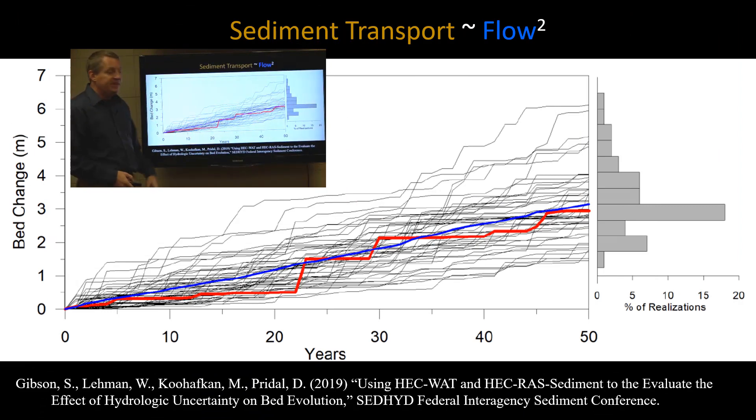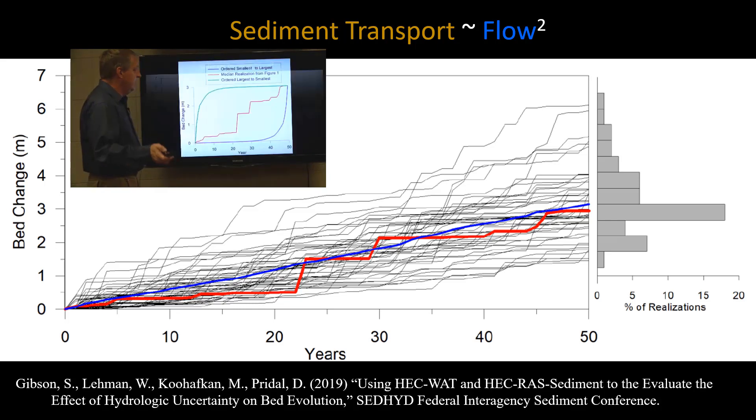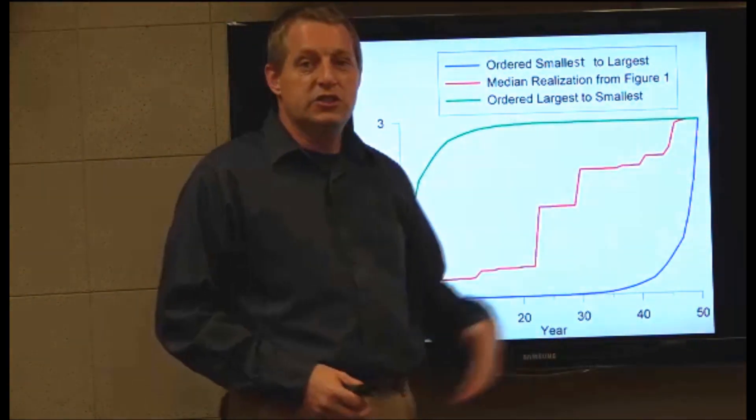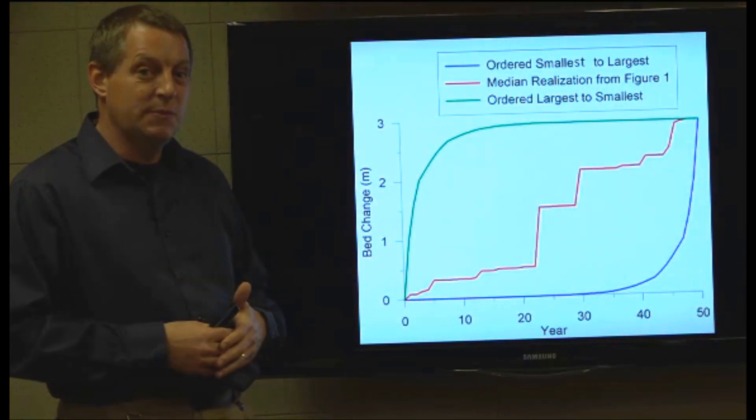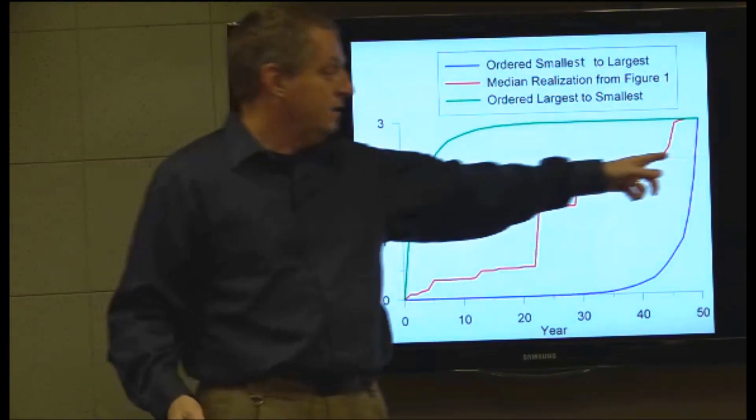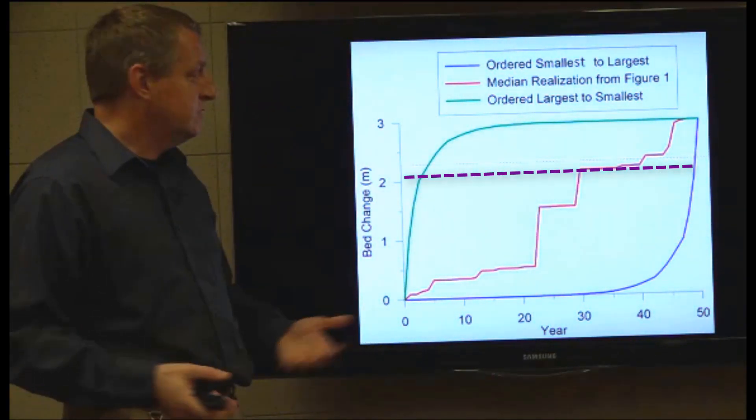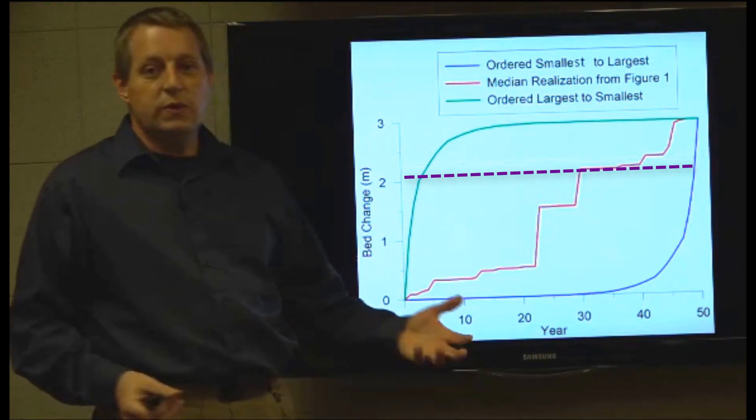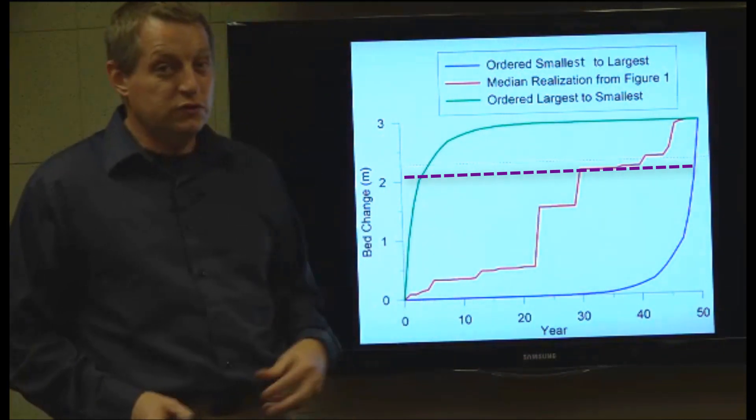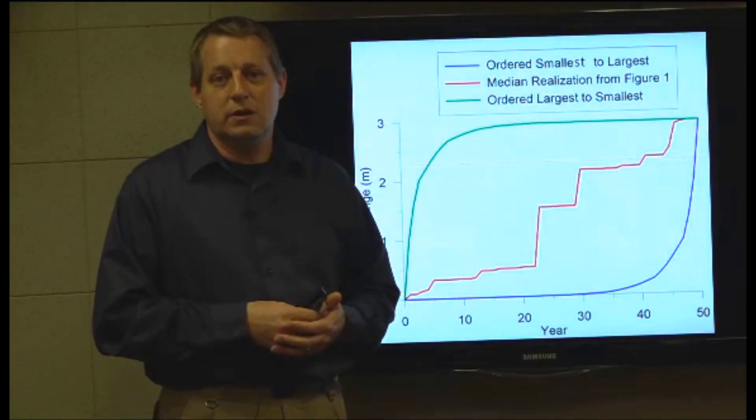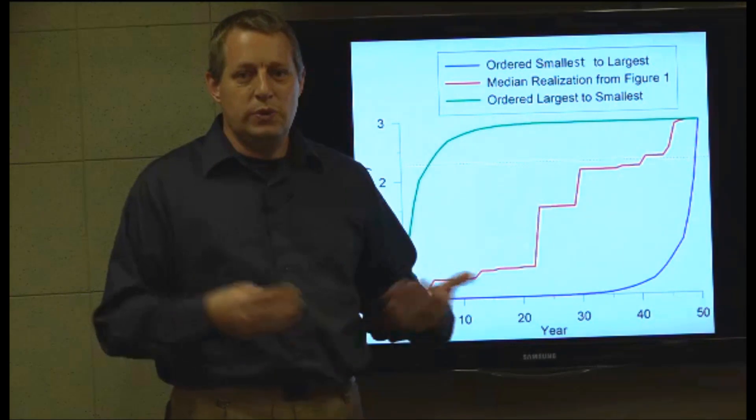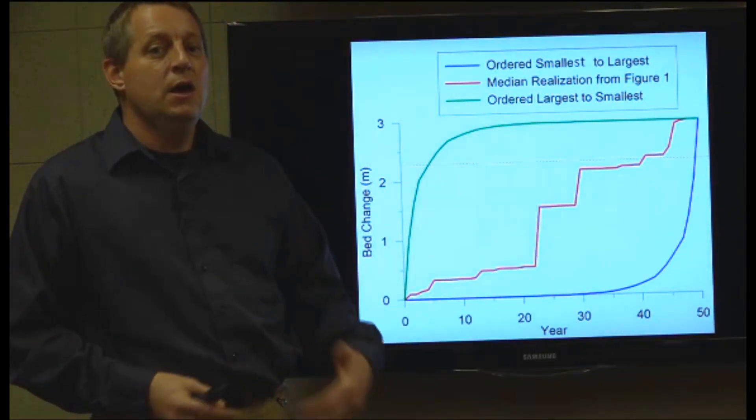And so as just kind of an illustration of that, this is all from a paper that I wrote with Will Lehmann and Dan Perdal at Sedhyde. And we're going to just take this red line and we're going to reorder it from largest to smallest or from smallest to largest to show you kind of the limits of the temporal impact that sediment can have as to when you lose benefits. So if you say lose benefits at this stage, you can see there's a pretty dramatic difference in how that will play out in your project life in your BC ratio. And so that's a complicated problem, something you're probably not going to come up with a closed form solution for.